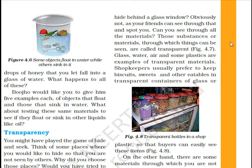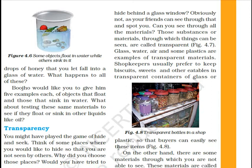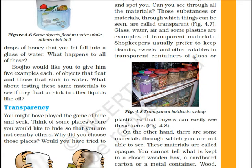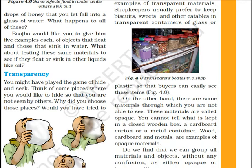Can you see through all materials? Those substances or materials through which things can be seen are called transparent. Glass, water, air, and some plastics are examples of transparent materials. Shopkeepers usually prefer to keep biscuits, sweets, and other eatables in transparent containers of glass or plastic so that buyers can easily see and purchase these items.